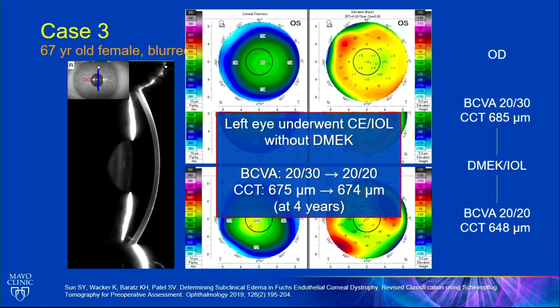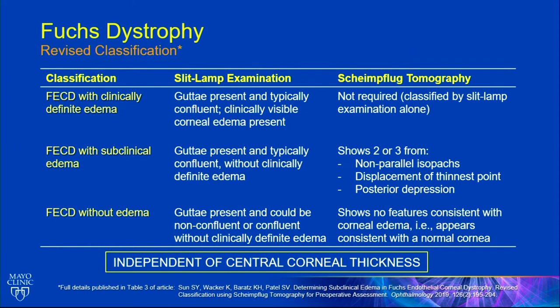For the other eye of that same patient, which had pretty much the same types of corneal maps, I just did cataract surgery — and this patient sees 20/20 four years later with minimal change in corneal thickness. This means we are now classifying Fuchs dystrophy differently using tomography. It's either Fuchs with clinically definite edema (visible at slit lamp), Fuchs with subclinical edema detected by tomography, or Fuchs with no tomographic edema. This is independent of central corneal thickness — we don't look at absolute thickness anymore; we look at the thickness map pattern.